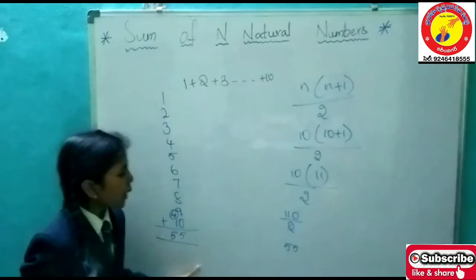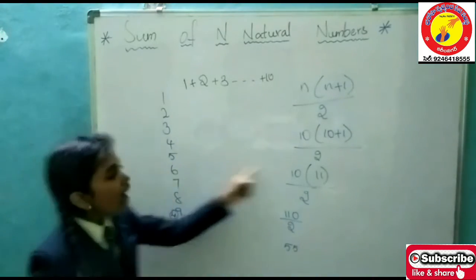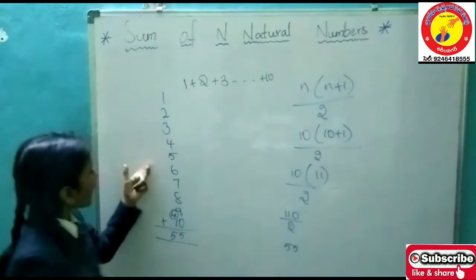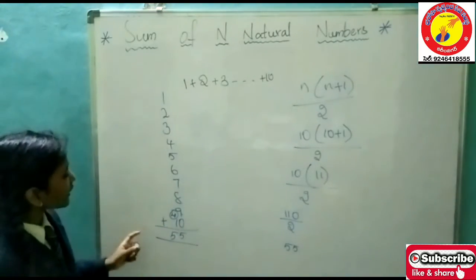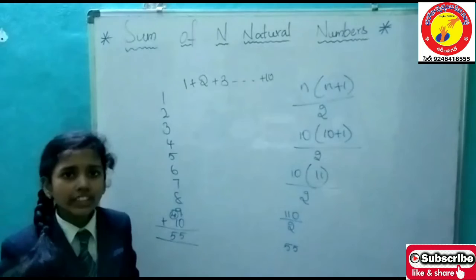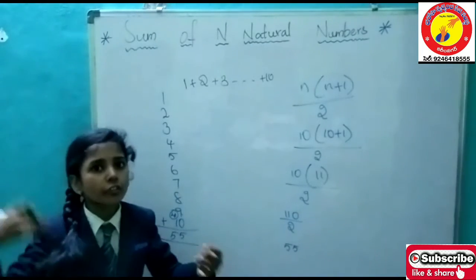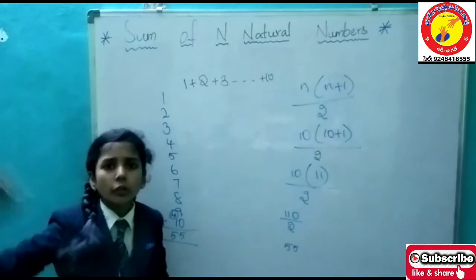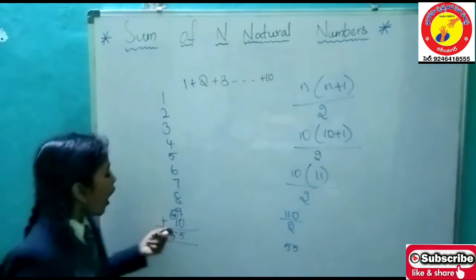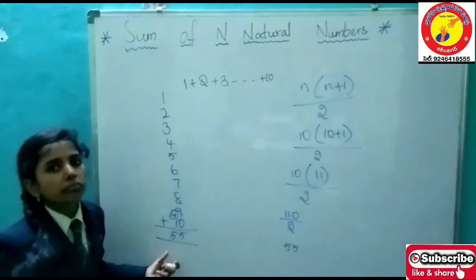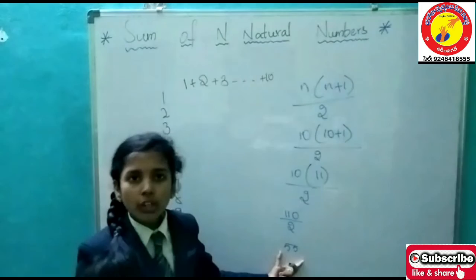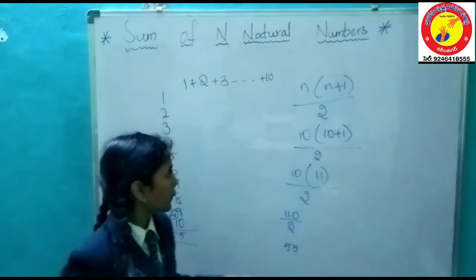So we got the same sum, but it is taking less time. When we are taking 10 numbers we can do this manually, but when they ask the sum of natural numbers from 1 to 500, 1 to 1000, 1 to 2000, how could we do this? We could do it but it takes much time. But when we do in this process it takes very less time to do.